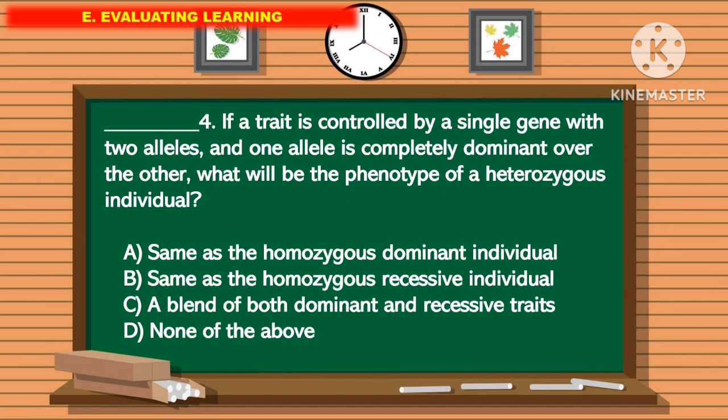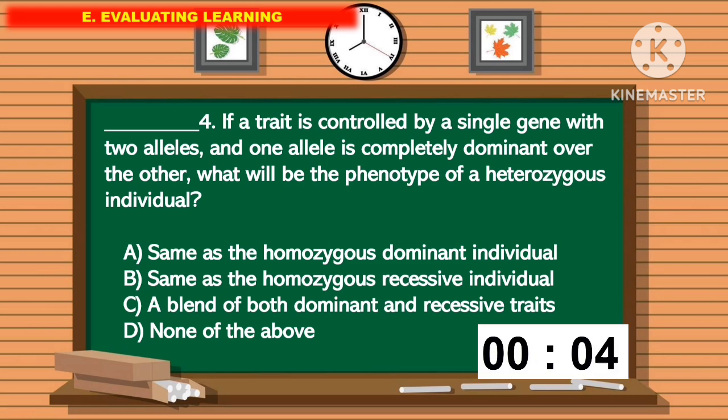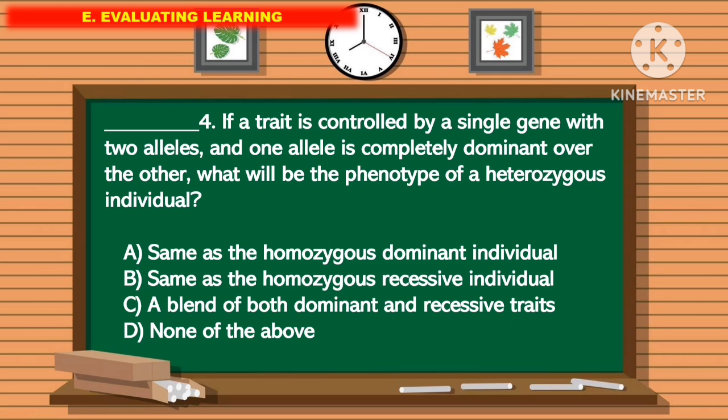For question number 4, if a trait is controlled by a single gene with two alleles and one allele is completely dominant over the other, what will be the phenotype of the heterozygous individual? The correct answer is letter A.